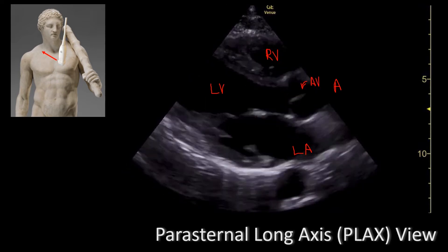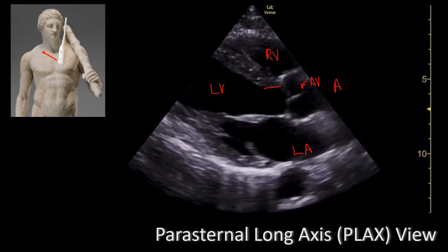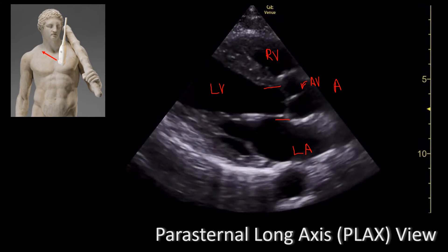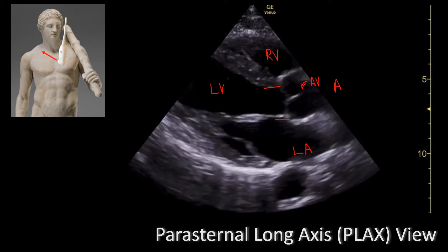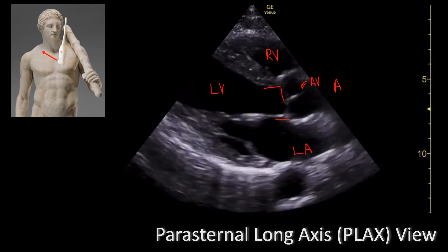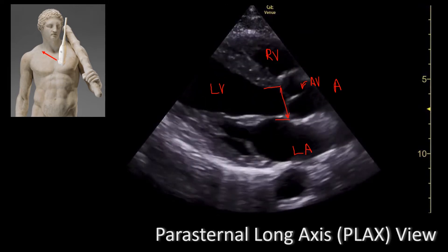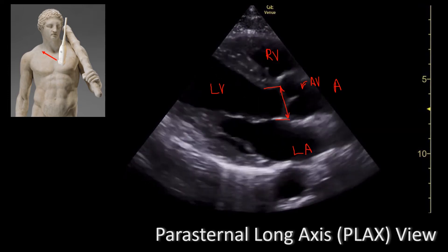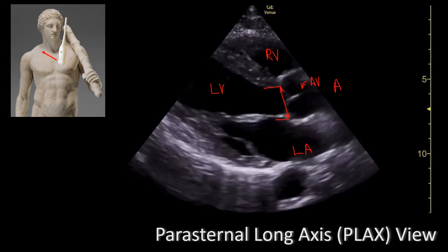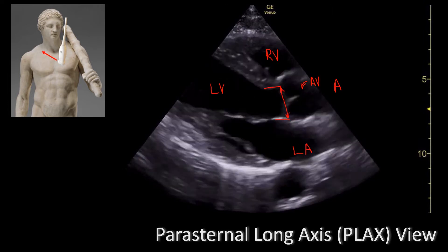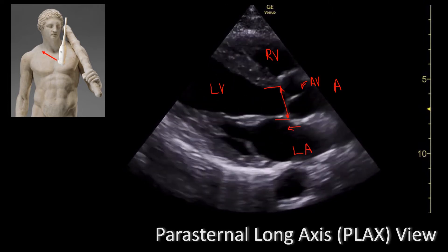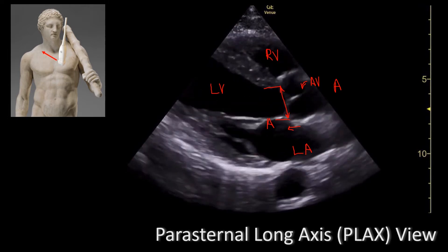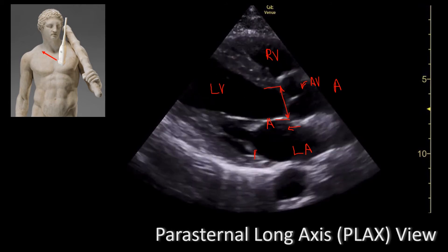Right before the aortic valve, you have a cylindrical structure called the left ventricular outflow tract, or LVOT. What's very important about the LVOT is that it's a cylinder, so you can actually measure the diameter. If we know the diameter, you can calculate the stroke volume and later on you can calculate the cardiac output. The leaflet of the mitral valve that is closer to your probe will be the anterior leaflet and the opposite one is the posterior leaflet.